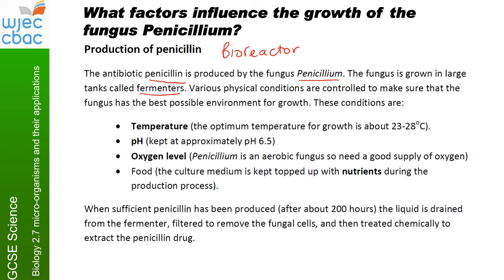Scientists want to maximise the production of penicillin, so they keep the temperature somewhere between 23 to 28 degrees Celsius — too high and it will destroy the fungus. pH is kept at approximately 6.5. Oxygen levels are kept fairly high because it's an aerobic fungus that needs a good supply of oxygen. The Penicillium is also given a culture medium — normally a form of sugar dissolved in liquid — and this is topped up with nutrients during the production process to make sure the fungus has plenty to use for respiration.